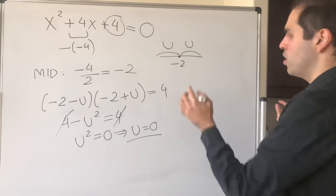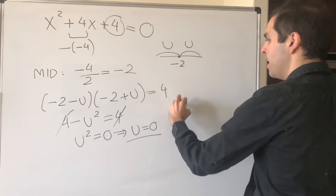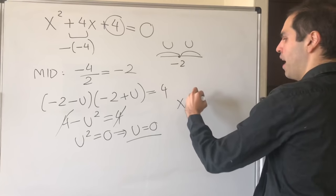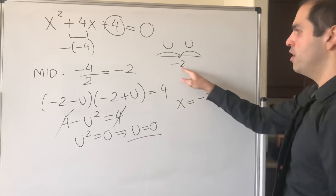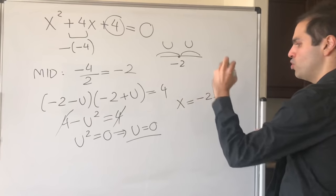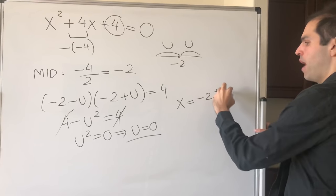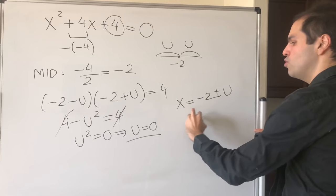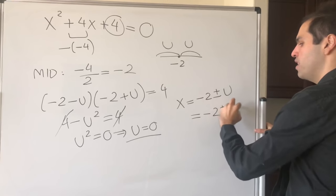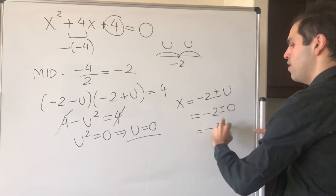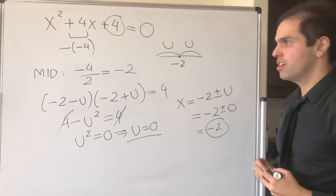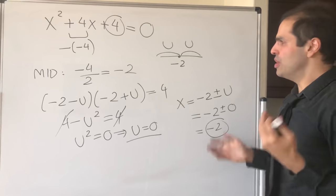And so what are the roots? It's simply x = -2, and then either -u or +u, which you can just abbreviate as -2 ± u. And that becomes -2 ± 0, which is -2. So that's good.